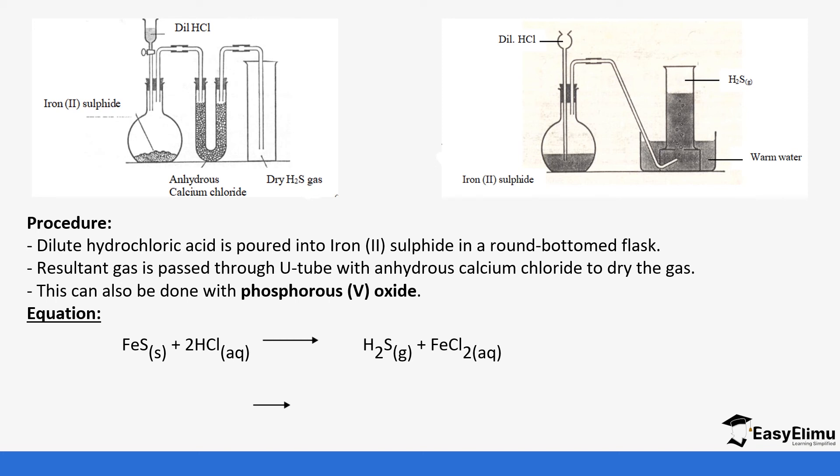Iron(II) sulfide reacts with hydrochloric acid to form hydrogen sulfide and iron(II) chloride. You can see there is interchange of ions—the iron takes the chloride ions to form iron(II) chloride. This equation is very easy to remember and understand.